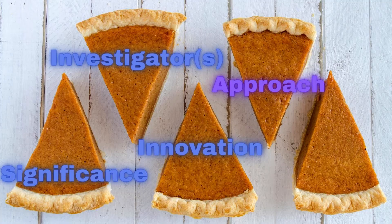The fourth piece of the pie is the approach. The approach is going to be the biggest part of the research section of your proposal. A lot of people have the misconception that the approach is the most important part and that's what reviewers will completely base their decision on. That's not true, because we have five pieces of pie and they are all equally weighted in the score. The approach is where you'll probably get most of your comments from the reviewers — they'll spend the most time on it — but that doesn't make it the most important part.